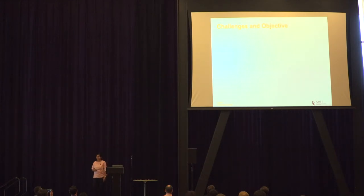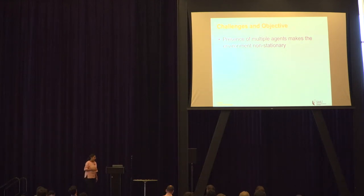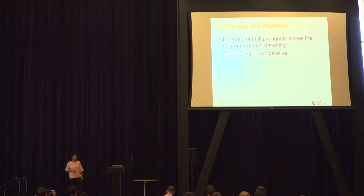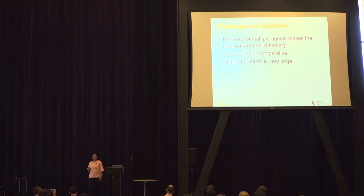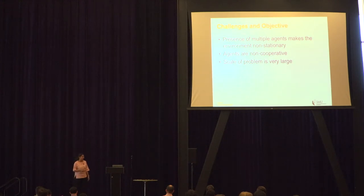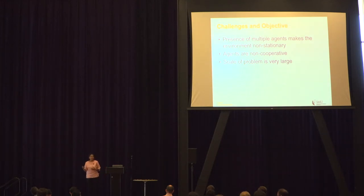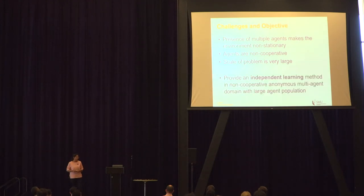Most importantly, the goals of aggregation companies to maximize overall revenue are not aligned with the goals of these individuals. However, individuals can utilize reinforcement learning to learn policies to be at the right location at the right time to maximize long-term revenue. There are challenges: multiple agents make the environment non-stationary — when an agent receives a payoff, it is not just due to its own action but the joint action of everyone. These agents are non-cooperative and non-communicative, so you won't know what others are doing. The scale is very large.